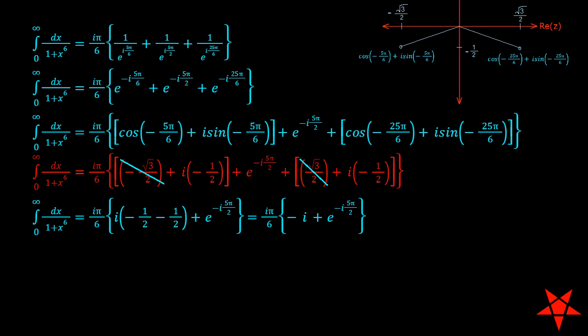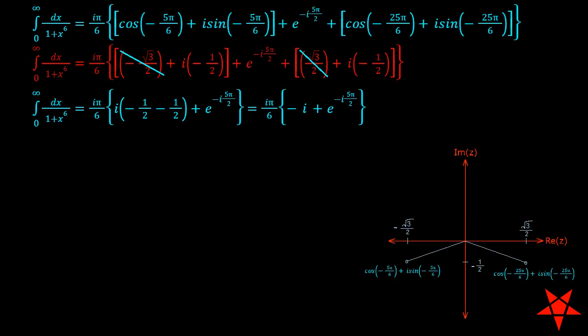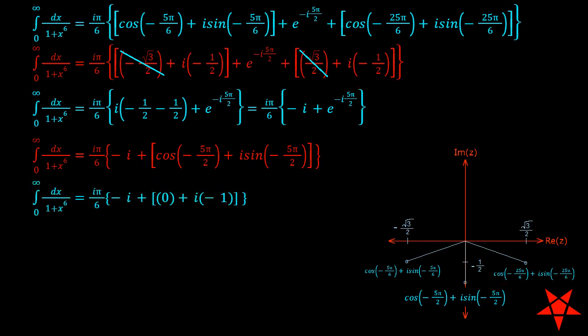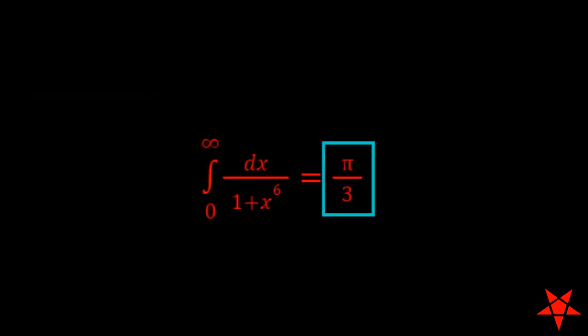Now we can focus on e to the negative i times 5 pi over 2 and use Euler's relation to expand it with sine and cosine functions. Since minus 5 pi over 2 lies on the negative imaginary axis, the result is entirely imaginary and leaves us with i pi over 6 times negative i minus i. After some arithmetic and evaluation of an i squared term, we get pi over 3 as the value of the improper integral of 1 over 1 plus x squared from 0 to infinity.